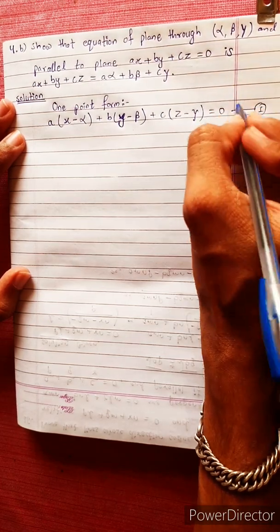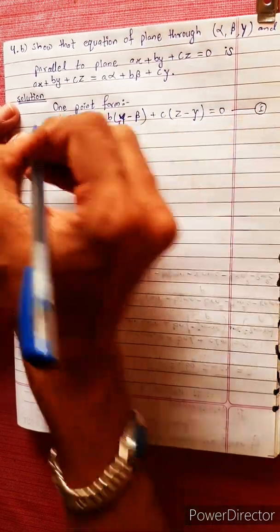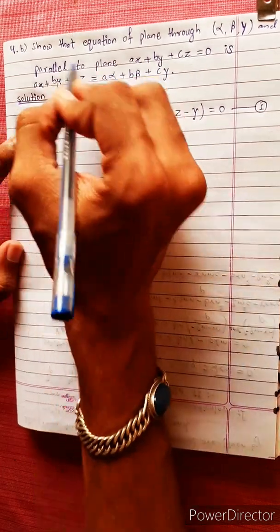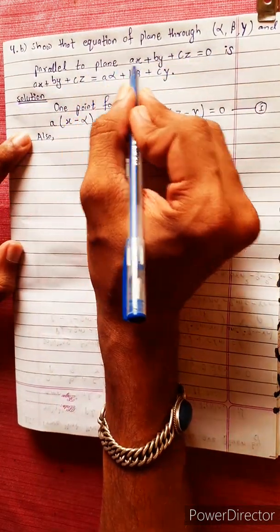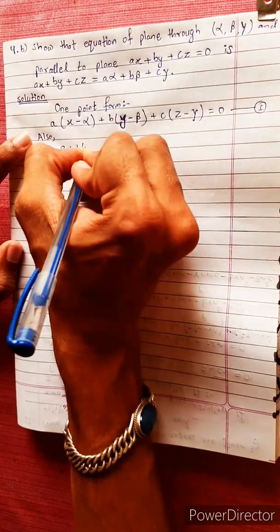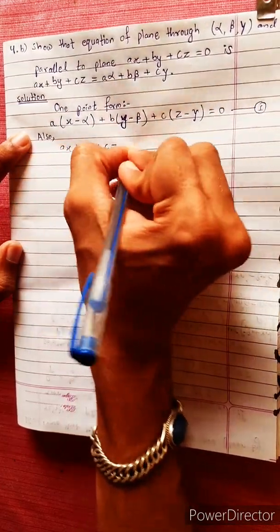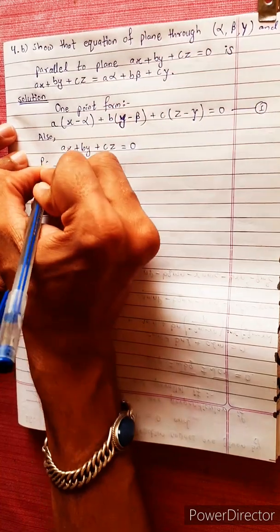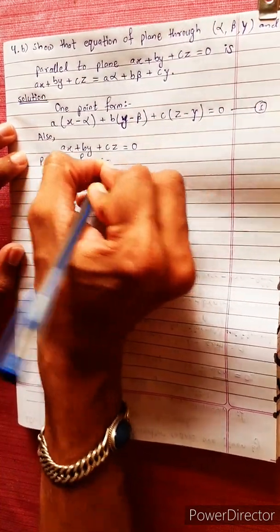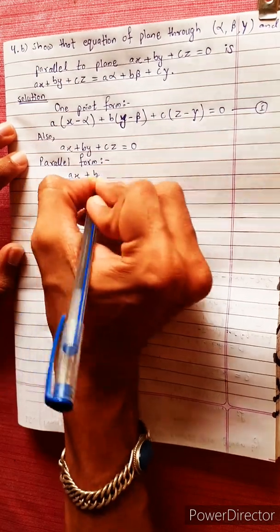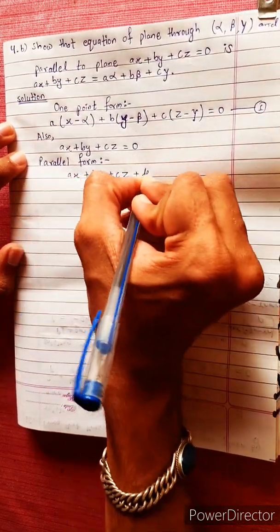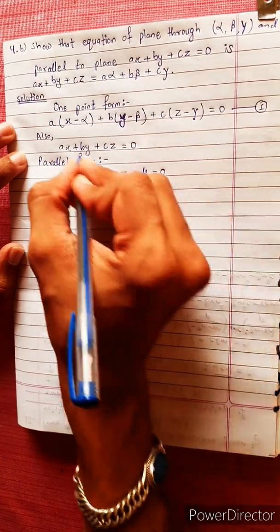This equation can be shown — we can prove that the traditional plane here is parallel to the plane A·x plus B·y plus C·z equals 0. This is the parallel form. We can also use: A·x plus B·y plus C·z plus k equals 0.